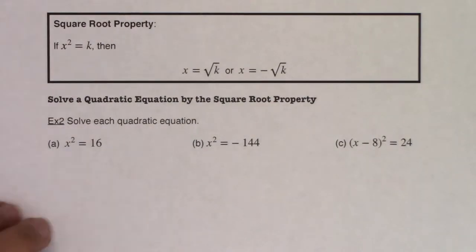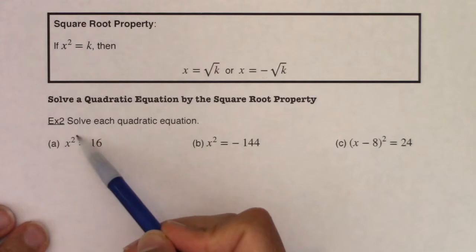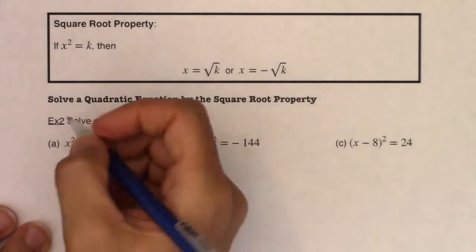So this is saying solve each quadratic equation. Now again, because I have something that's squared and equal to a number, there's no x terms over here, I am going to use the square root property.